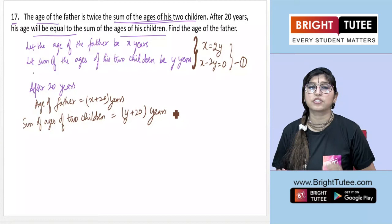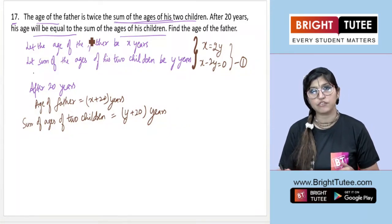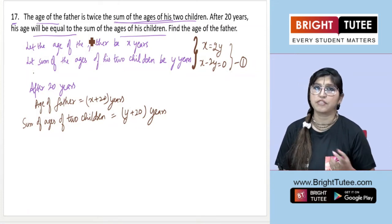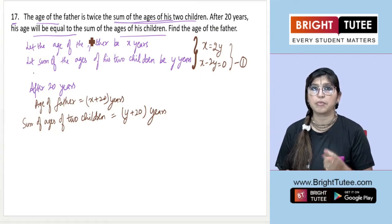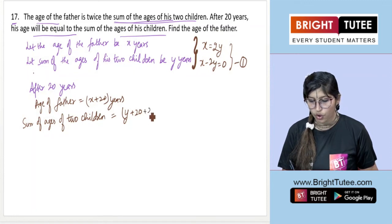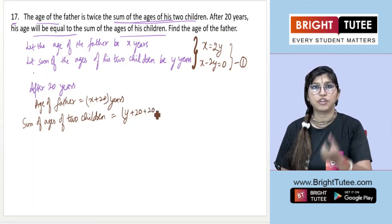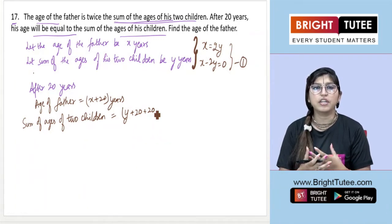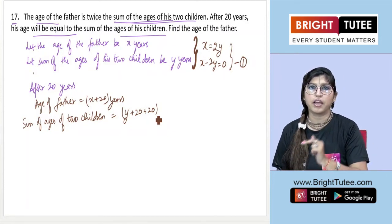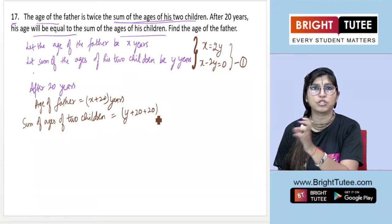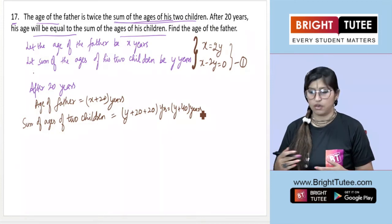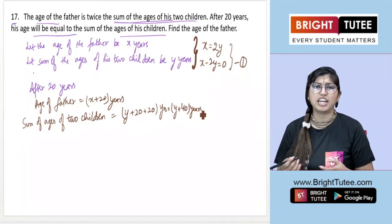This is the key mistake most students make. After 20 years, if one child is 10 years old, they become 30. If another child is 5 years old, they become 25. So each child's age increases by 20. The sum of both children's ages increases by 20 plus 20, meaning the sum becomes y plus 40 — not y plus 20. That's why we write y plus 40 years for the sum of the children's ages after 20 years.